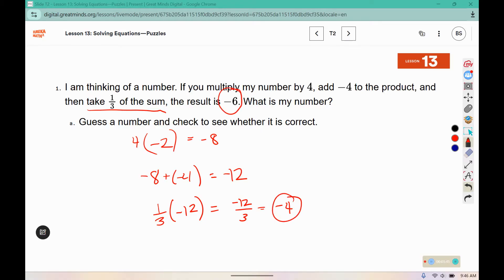But my result was supposed to be negative 6, so to determine whether ours was correct, negative 2 is not the number this person was thinking of because it came out to negative 4 instead of negative 6.